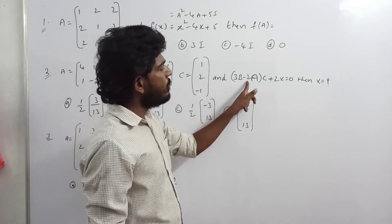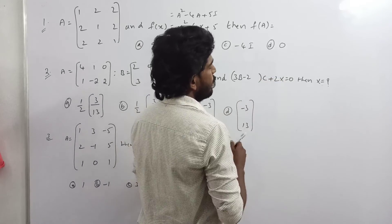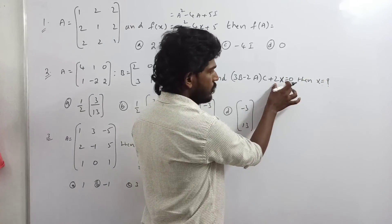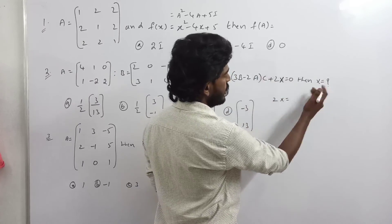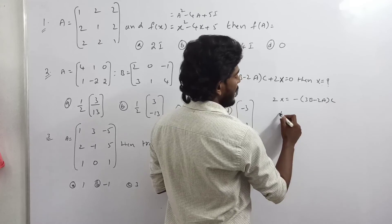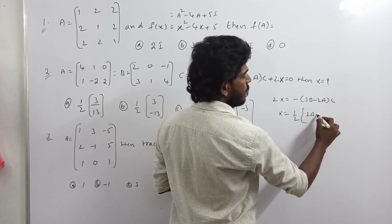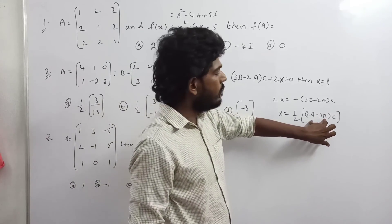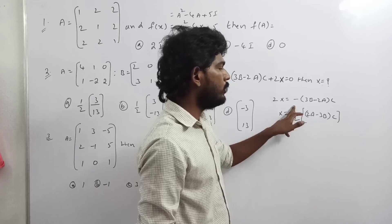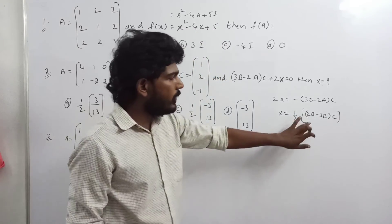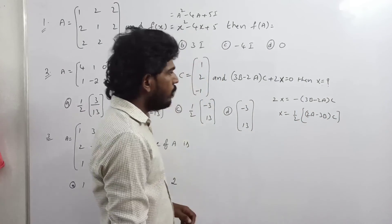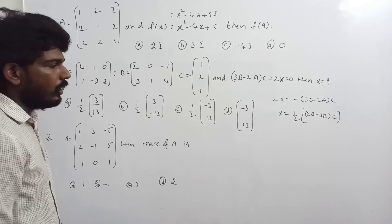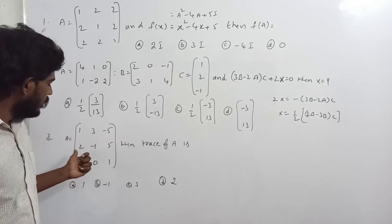Next: given A, B, C matrices and 3B minus 2A into C plus 2X equals 0, find matrix X. So 2X equals minus of 3B minus 2A into C. Therefore X equals one half multiplied by 2A minus 3B multiplied by C.